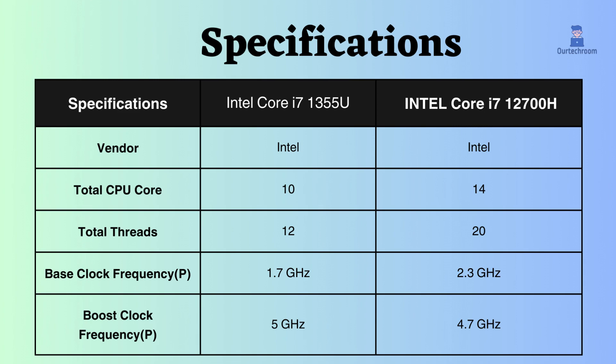But having a greater number of cores, the Intel Core i7-12700H can perform as equivalent to or more than the Intel Core i7-1355U.